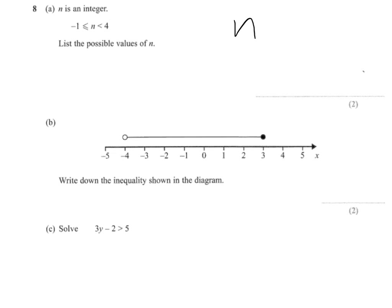So we're told then that n can be greater than or equal to minus 1, so we can be equal to minus 1, so we start at minus 1, but we're less than 4, so we can't be 4, so we go up in whole numbers.